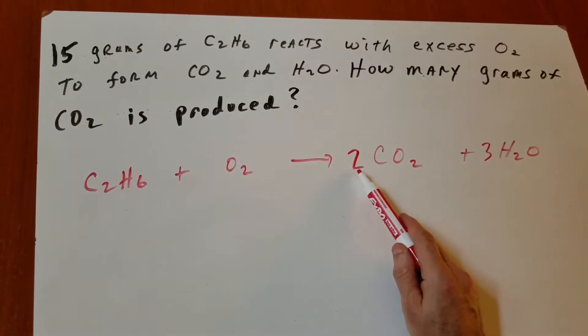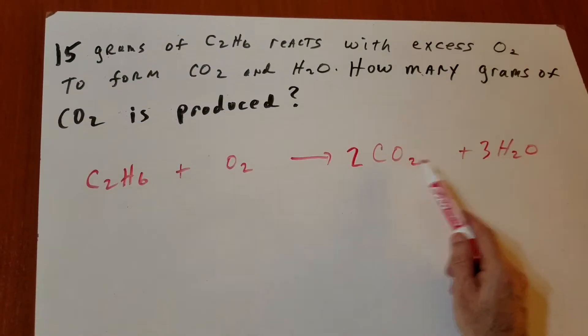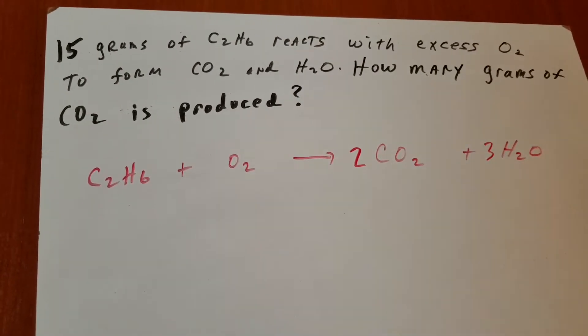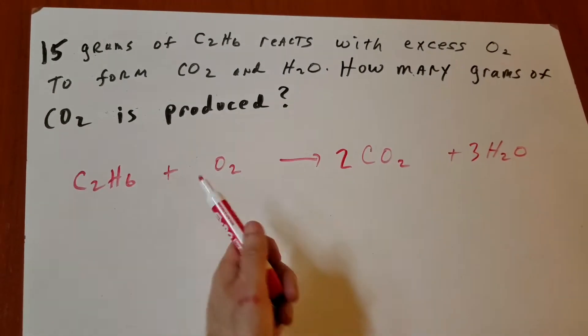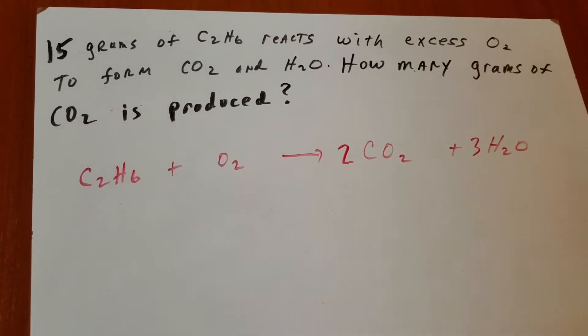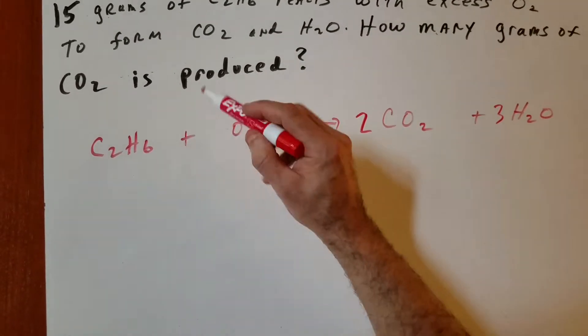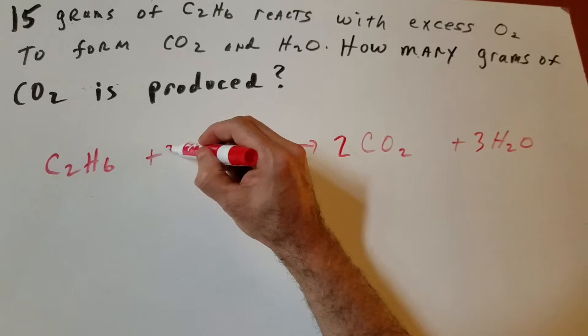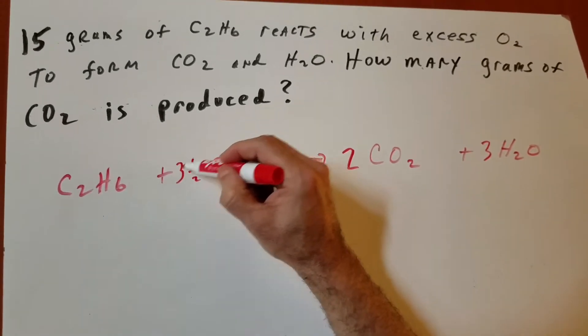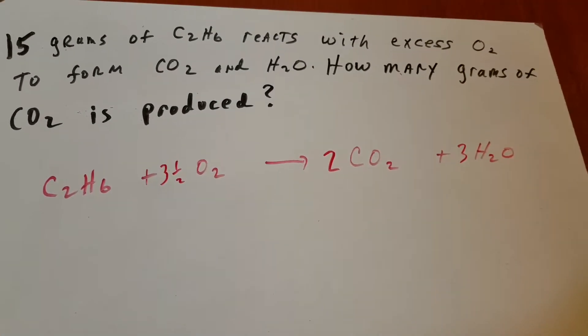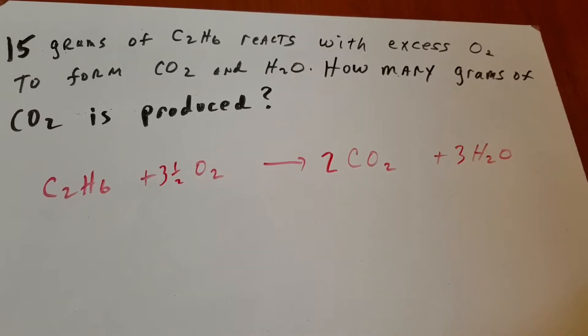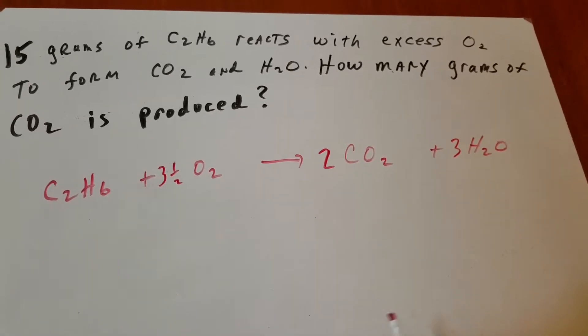Now, on the right side, there's two times two is four O's, and then three more gives you seven. You have seven oxygens on the right, so on the left side you need seven oxygens. So to balance this, I'm going to need three and a half, because three and a half times two is seven. I know a lot of teachers say not to use a fraction. Bullshit. Fraction is perfectly fine.